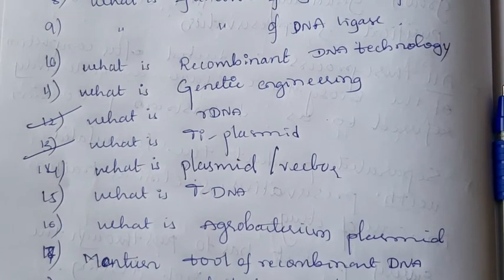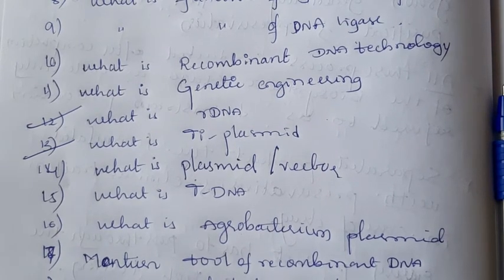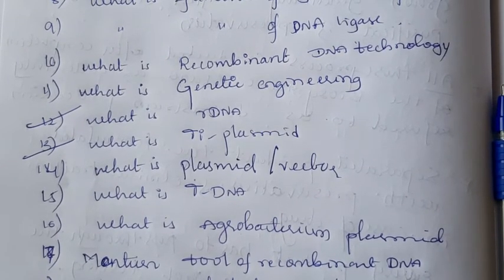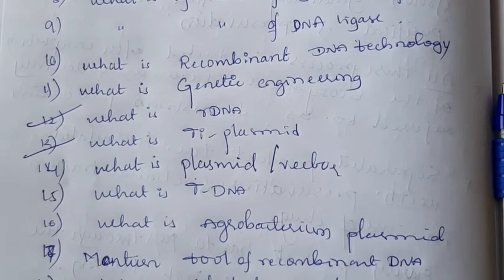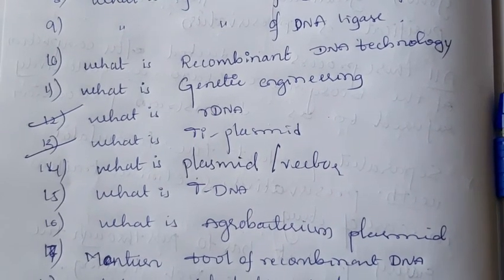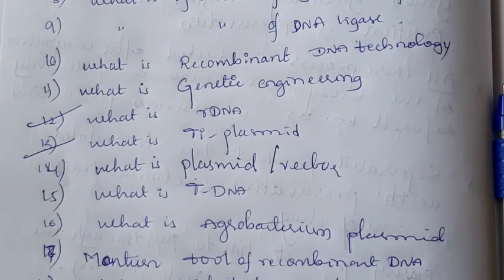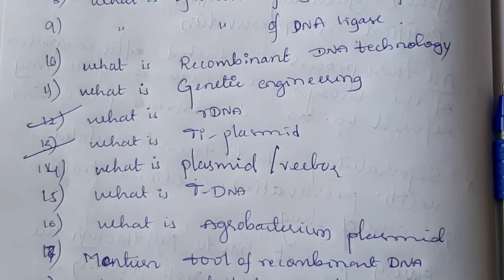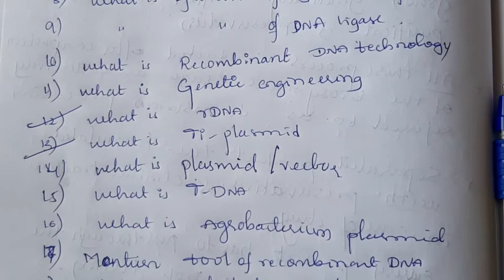Next question: what is a plasmid or what is a vector? Plasmids are extrachromosomal circular DNAs, also known as molecular vehicles, which are usually present in bacteria, chloroplasts, and mitochondria. In bacteria, plasmids are extrachromosomal circular DNAs that have antibiotic-resistant genes, which are very necessary for movement of DNA. Those are called molecular vehicles.